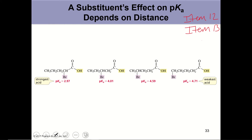Another substituent effect we should consider is distance. We can compare the electronegativity of the halide in addition to distance, but it would be much more difficult if we varied both the identity of the halide and its position. On the homework or on the ACS exam, you will vary one or the other — not both distance and electronegativity at the same time.